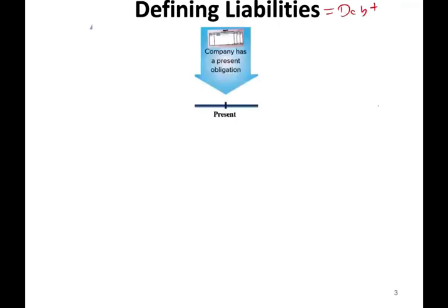So let's talk about liabilities. What is a liability? If you want to use one word for liability, the word is debt. But really, a liability is a present obligation — you have to pay something, you are under an obligation, you have to perform. So a company has a present obligation.